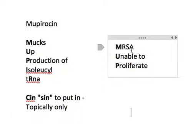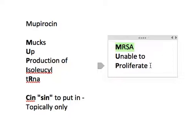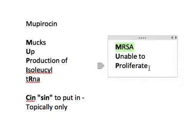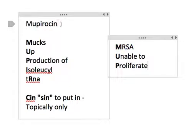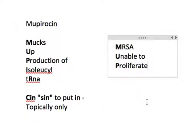Another thing to remember is that it does actually have MRSA activity. So in the cases of skin MRSA infections, you could, if reasonable, use Mupirocin. We can remember that with the mnemonic that MRSA is unable to proliferate with Mupirocin.